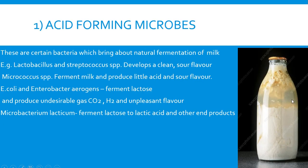The first one is the acid-forming microbes. Because of the acid-forming bacteria, the milk is going to have a curdling property. Acid-forming microbes are certain bacteria which bring about natural fermentation of the milk. The most common type is the lactic acid bacteria, which causes souring of milk under natural conditions. Milk of good sanitary quality kept under conditions that allow the growth of Streptococcus and Lactococcus species develops a clean and sour flavor.